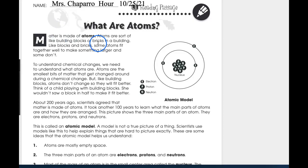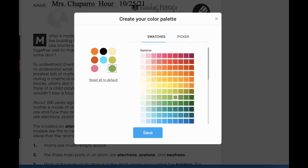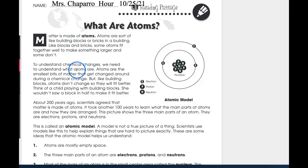The title of our article is What Are Atoms? When I go through here I'll be using a highlighter to highlight some things. I expect you to do that as well because it will help you with your work that you will complete by yourself. So here we go. What are atoms? Matter is made of atoms. Atoms are sort of like building blocks or bricks in a building. Like blocks and bricks, some atoms fit together well to make something larger and some don't.